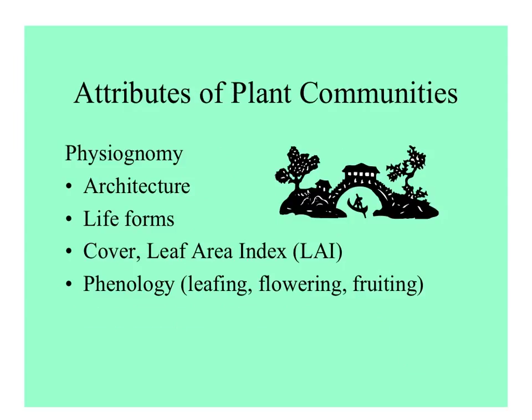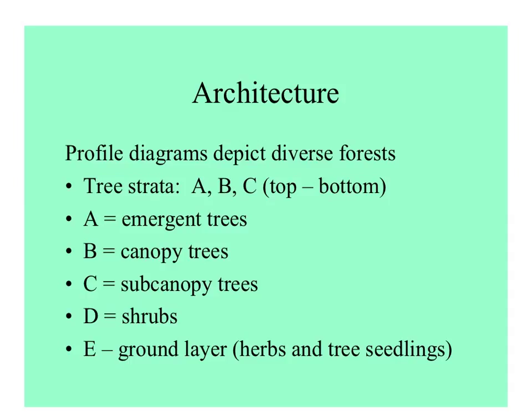I want to go over some important attributes of plant communities: architecture, life forms, cover, and phenology. Let's look at architecture first. It was customary in early plant ecology to use profile diagrams to depict forest composition. Any forest has different strata: A at the top, B lower, and C lower still — where A are trees that emerge out of the top of the canopy, and B are the canopy trees.